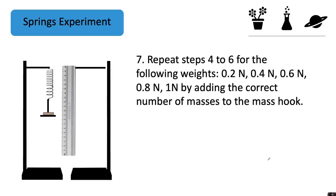You would then repeat steps four to six for the following weights: 0.2 Newtons, 0.4 Newtons, 0.6 Newtons, 0.8 Newtons, and 1 Newton, for example, by adding the correct number of masses to the mass hook.